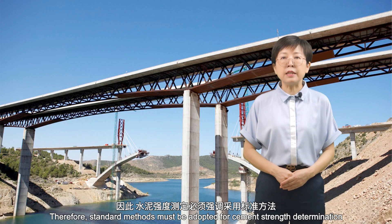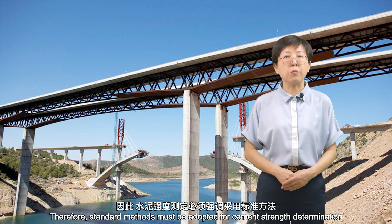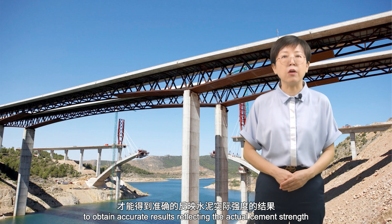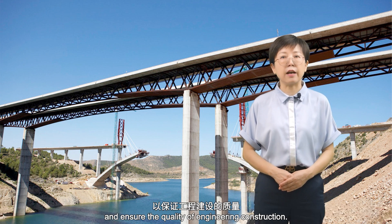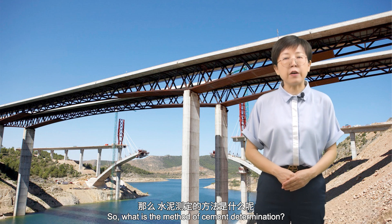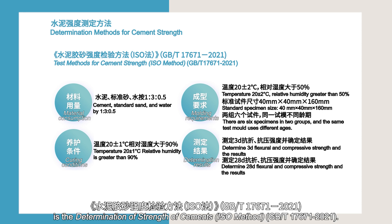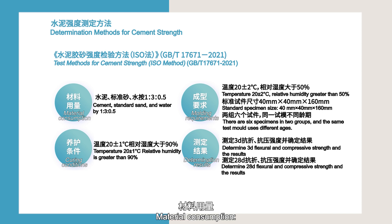Therefore, standard methods must be adopted for cement strength determination to obtain accurate results reflecting the actual cement strength and ensure the quality of engineering construction. The standard method for cement determination is the Determination of Strength of Cements, ISO method, GBT 17671-2011. The material consumption ratio is: cement to standard sand to water = 1 : 3 : 0.5.